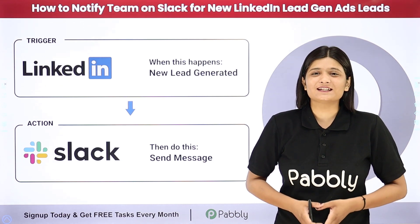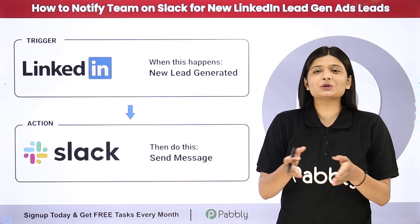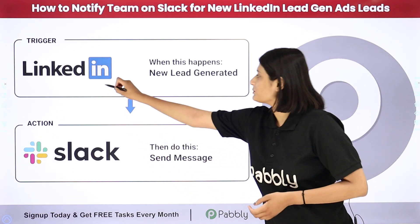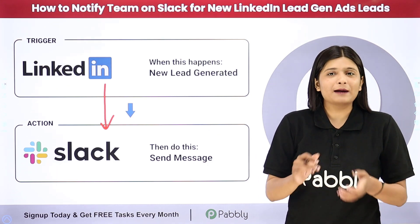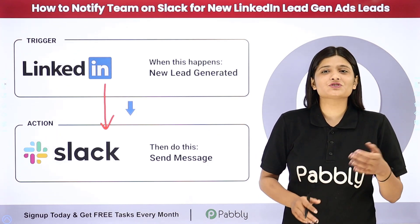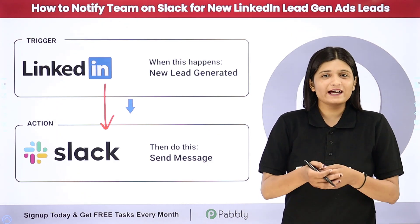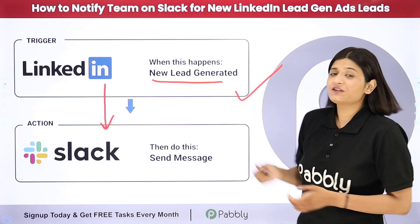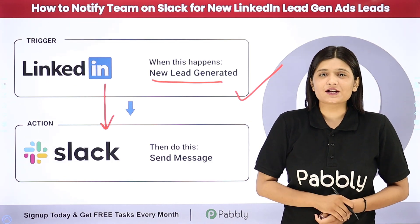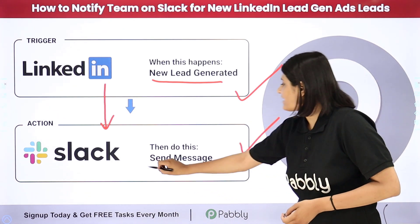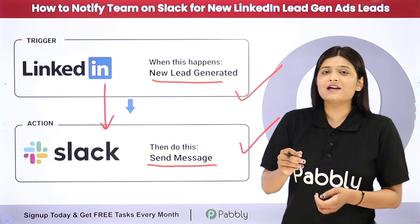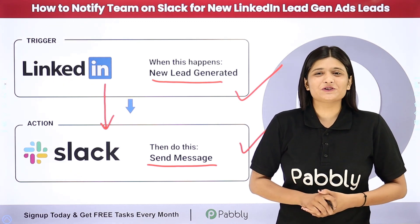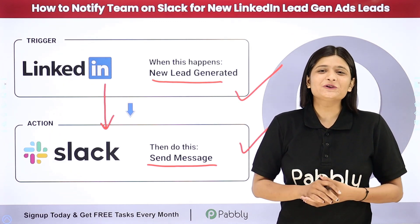Pably Connect is an amazing automation and integration software which requires no coding or programming skills. I just need to build a connection between LinkedIn lead gen ads and Slack. Pably Connect runs on two principles: trigger and action. My trigger application will be LinkedIn lead gen ads where I will receive new leads, and my action application will be Slack where I will send a channel message whenever I receive a new lead and notify my team.